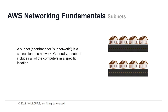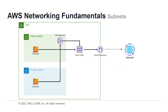So what is a subnet? A subnet, short for subnetwork, is a subsection of a network. Generally, a subnet includes all of the computers in a specific location. Continuing with the neighborhood analogy, all houses on the same street would be a subnet. There are two types of subnets: public and private. Instances in the public subnet can send outbound traffic directly to the internet, whereas instances in the private subnet cannot — they use a NAT gateway that resides in the public subnet.